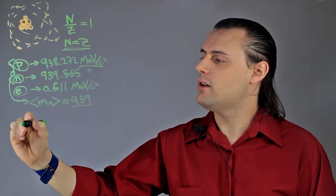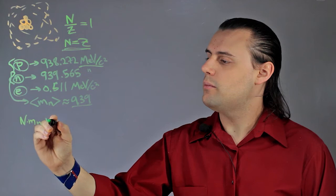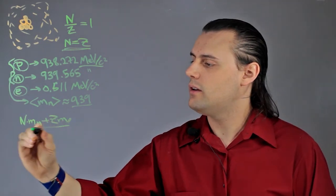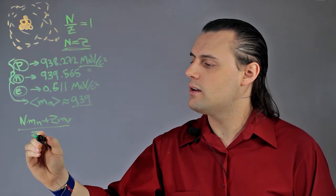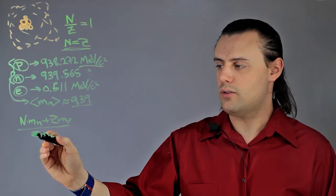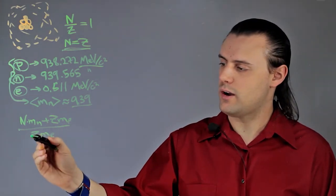I start with the number of neutrons times the mass of the neutron plus the number of protons times the mass of the proton divided by the number of electrons times the mass of the electron. Again, I'm assuming I have just as many electrons as I do protons, which is why I use z.